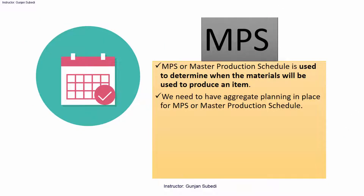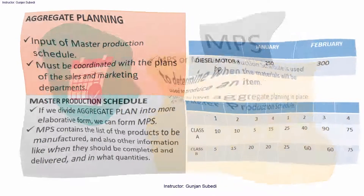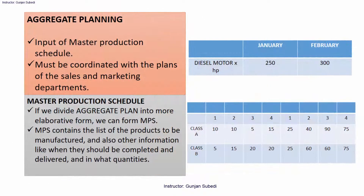MPS, or master production schedule, is used to determine when the materials will be used to produce an item. We need to have aggregate planning in place for MPS. Understand aggregate planning as an input of the master production schedule.